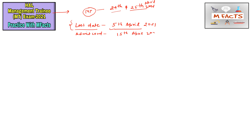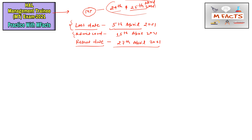You may download the admit card on or after 15th April. The examination dates are 24th and 25th April 2021, as already mentioned. The result announcement date is 27th April, so they will announce results on 27th April. These are the important dates related to HAL recruitment and HAL Management Trainee.